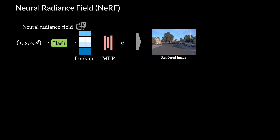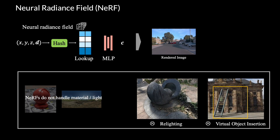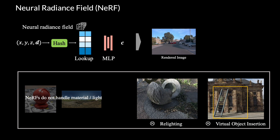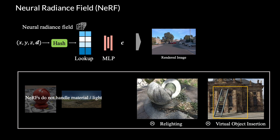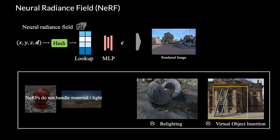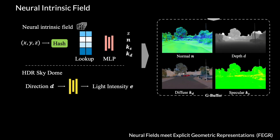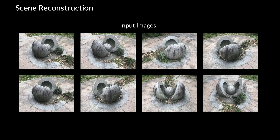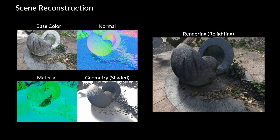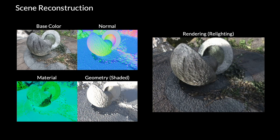Neural radiance fields, or NeRFs, emerge as a promising 3D representation. However, NeRFs bake the lighting into the scene and don't allow for applications such as relighting and object insertion. Instead of directly modeling the radiance, Fager decomposes the scene into multiple passes of physics-based material properties.